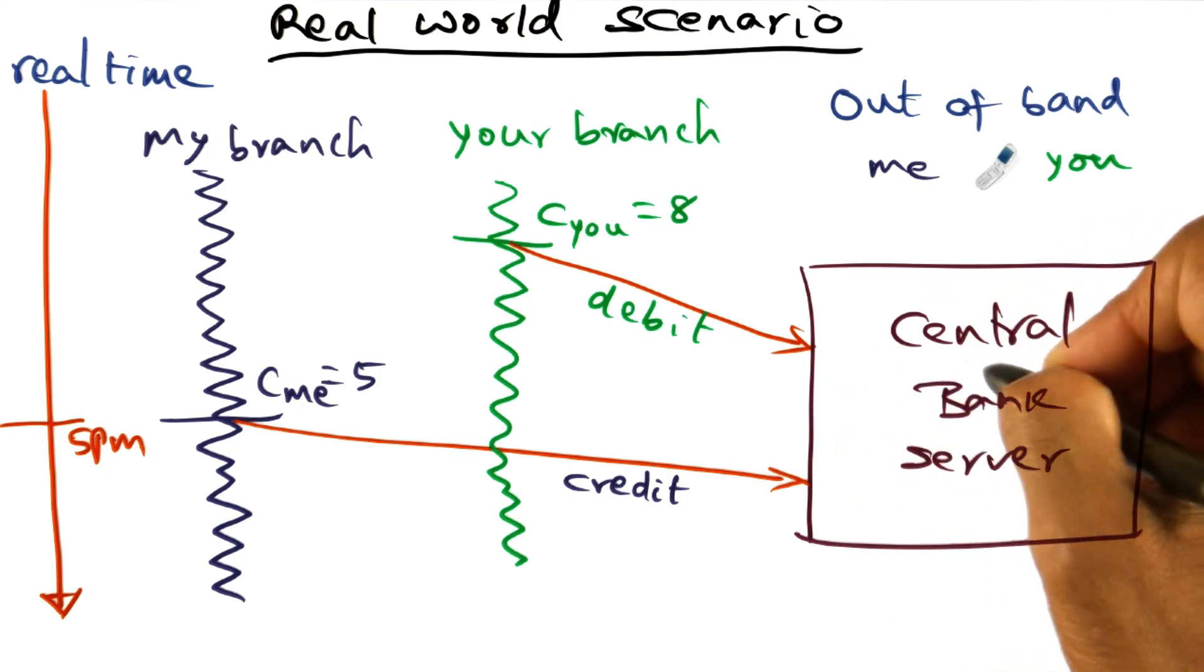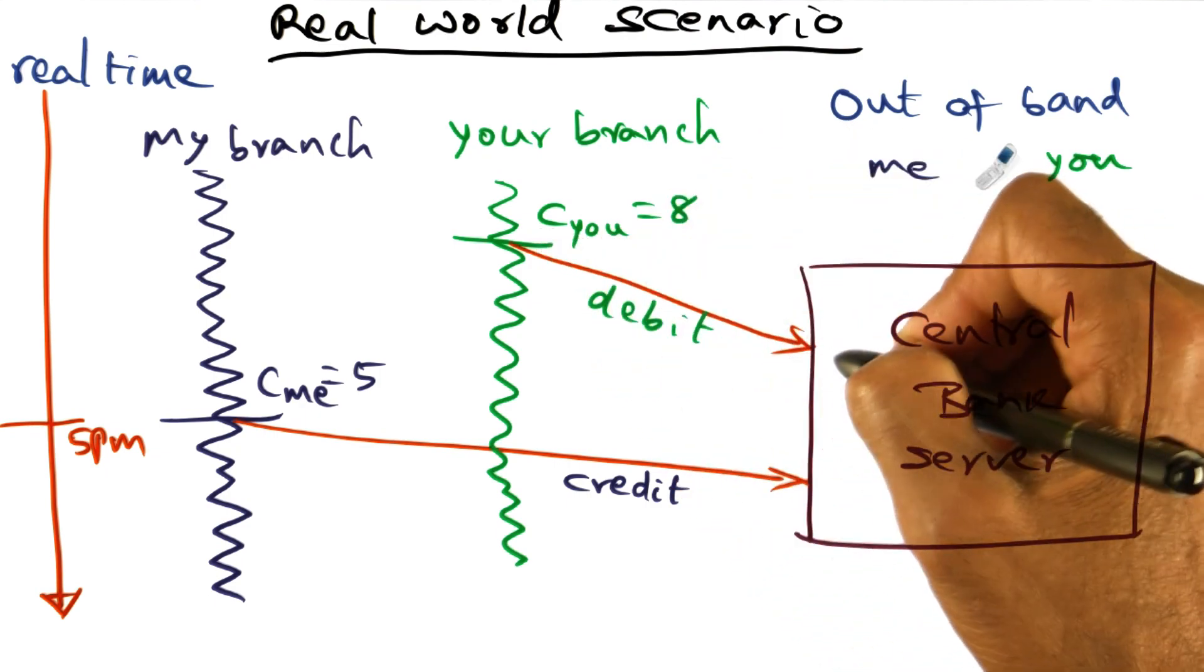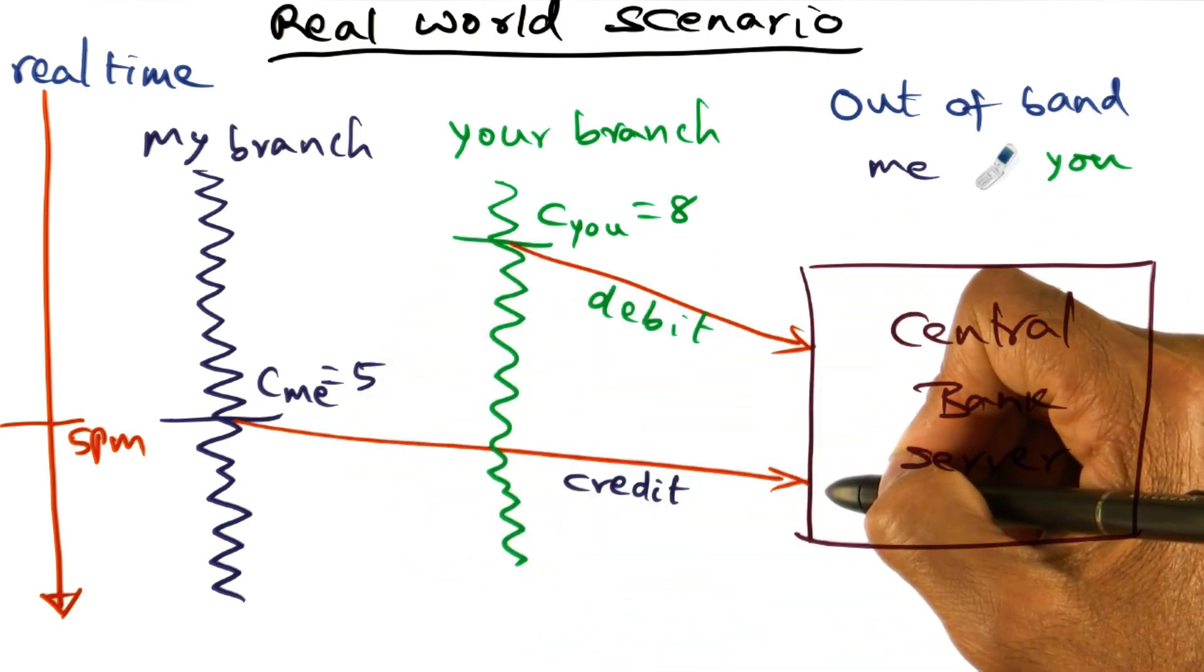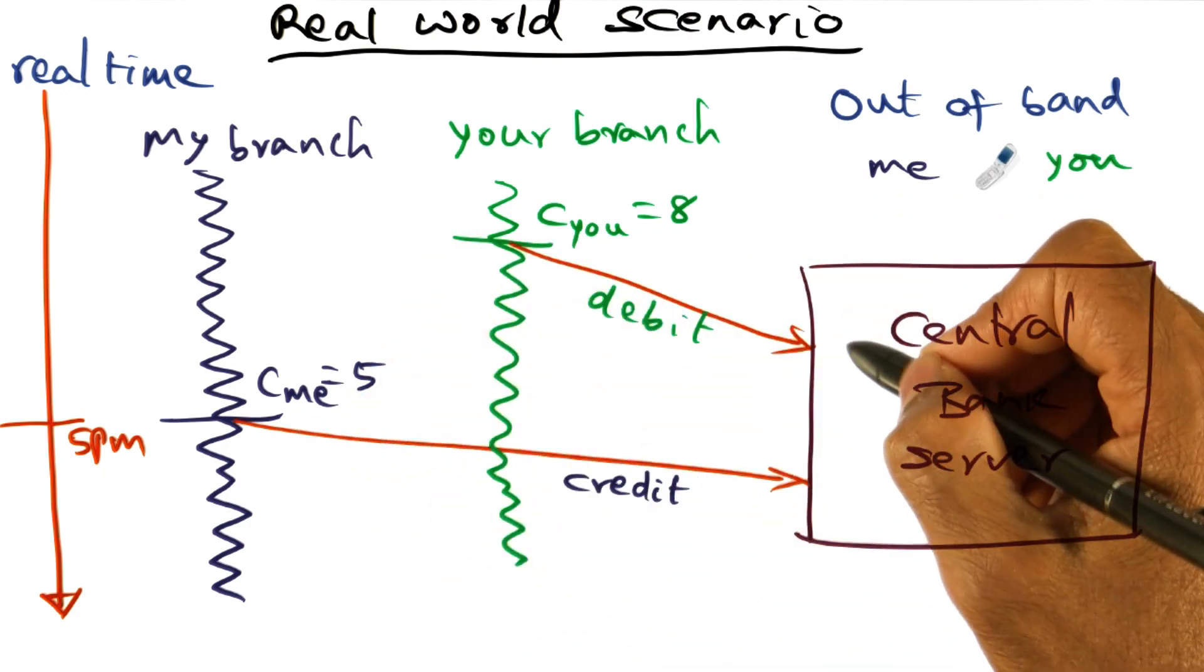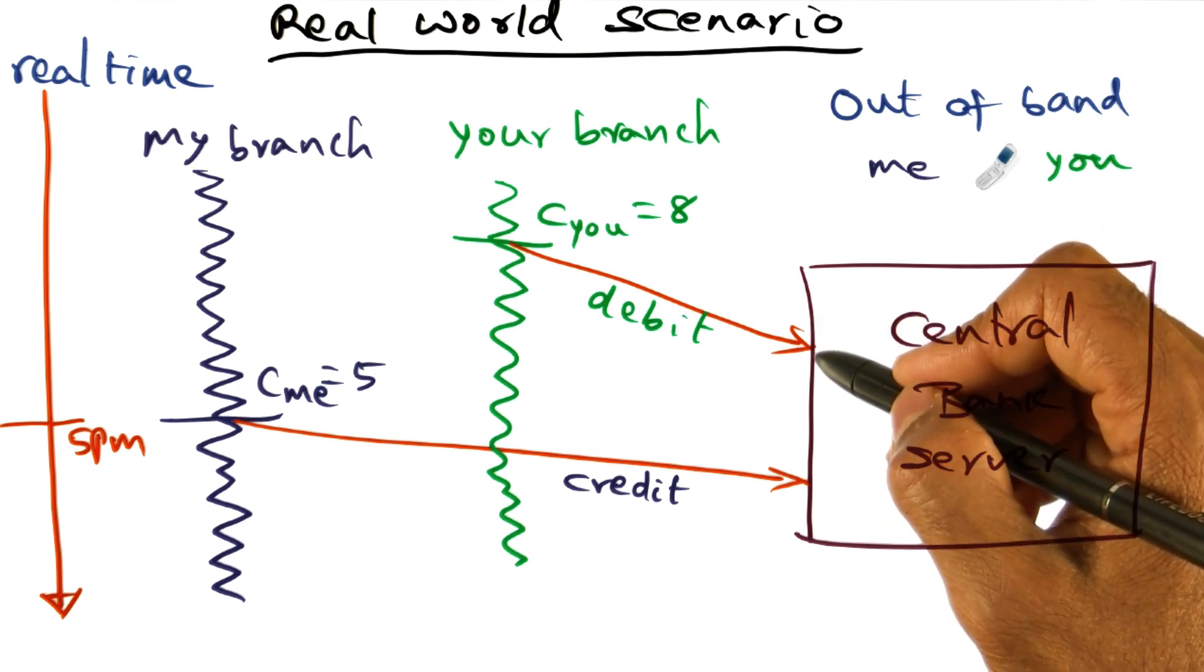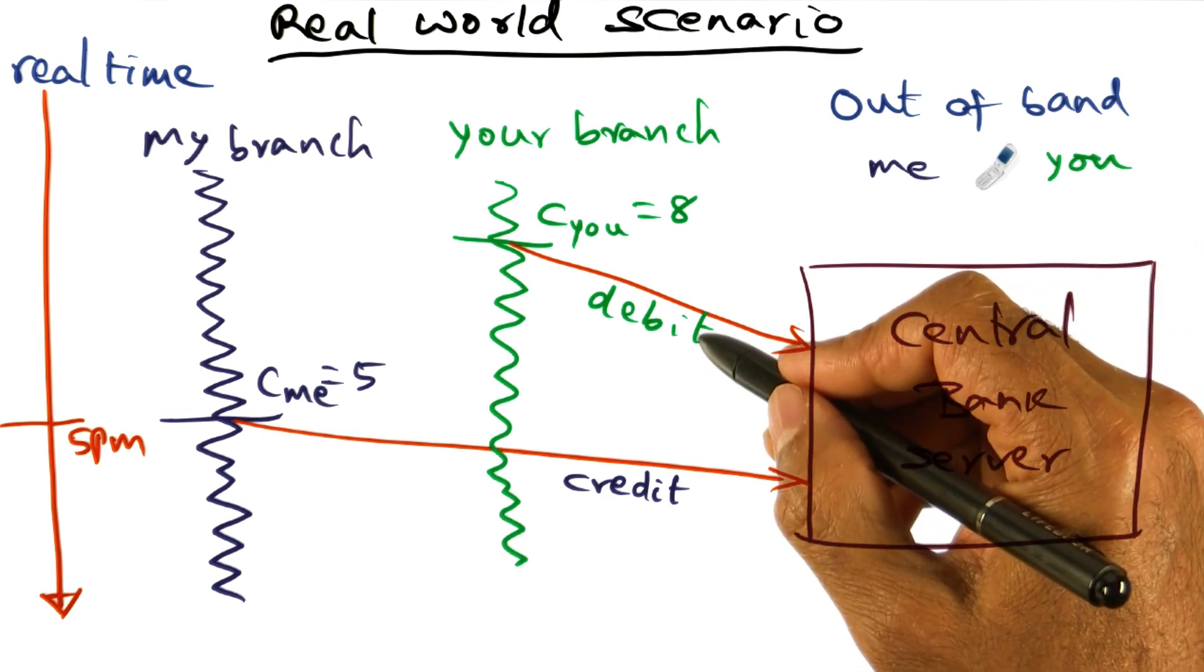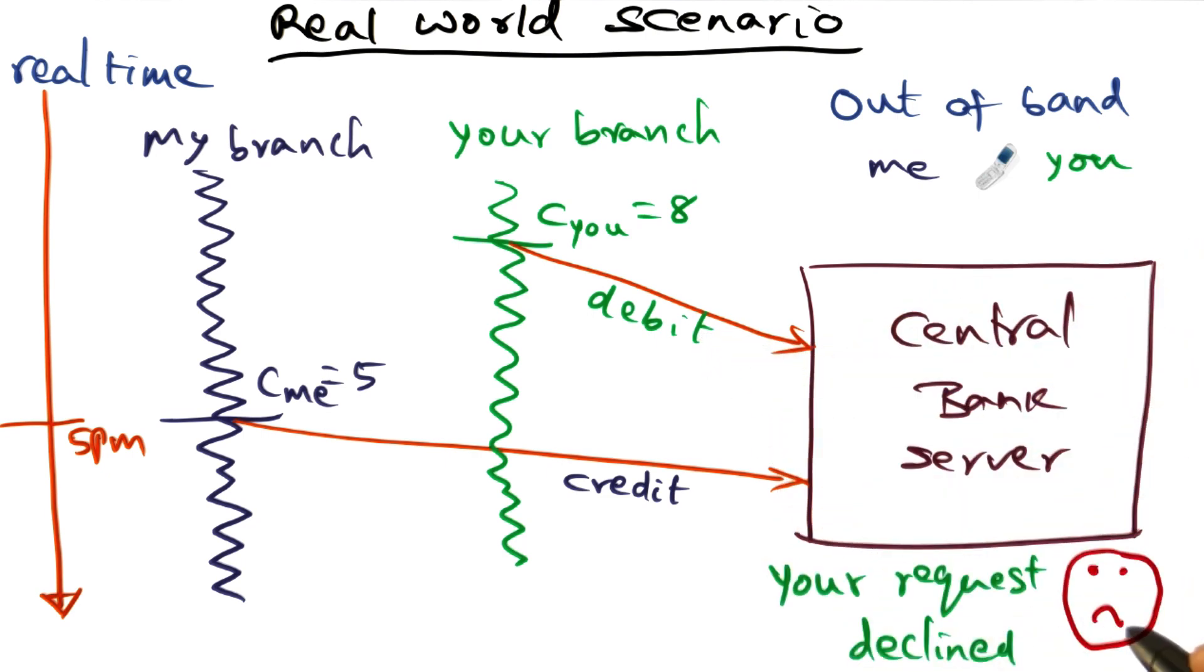But unfortunately, the central bank server, in real time, it got your message much earlier than the time at which I sent my message. It's not looking at any logical time. It is looking at real time saying, well, there's a debit transaction coming in. Is there money in the bank for paying this debit transaction? No, it isn't. So your request is declined.